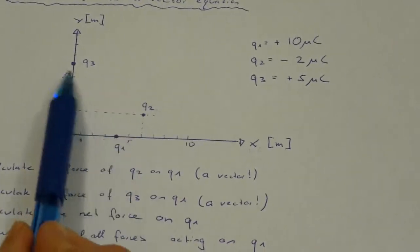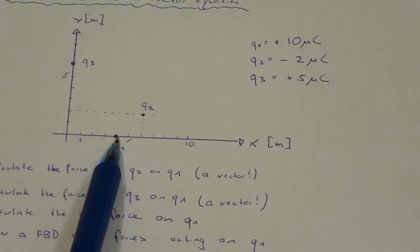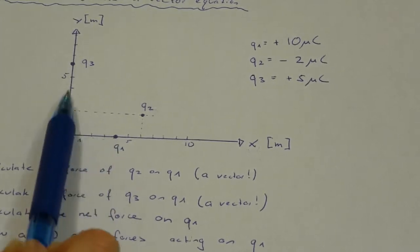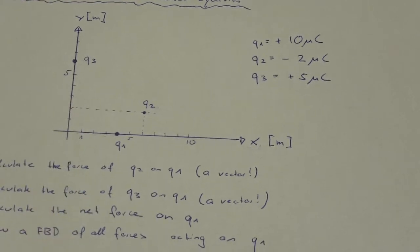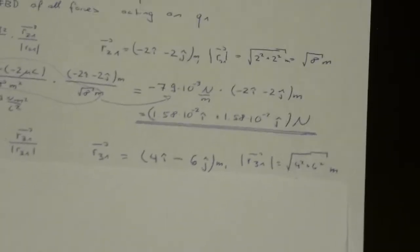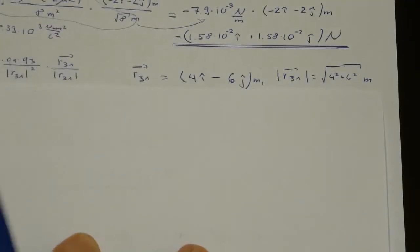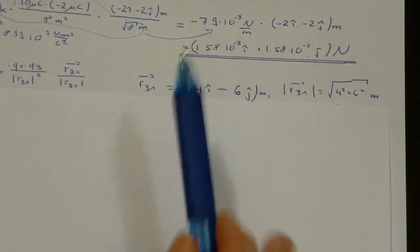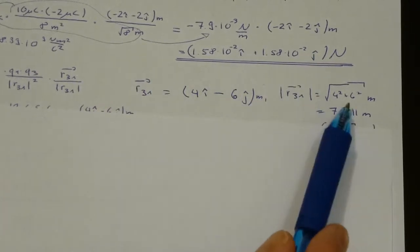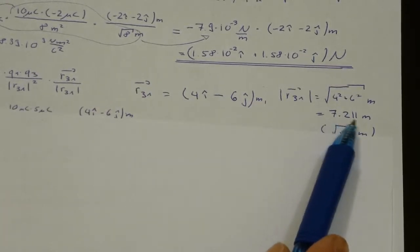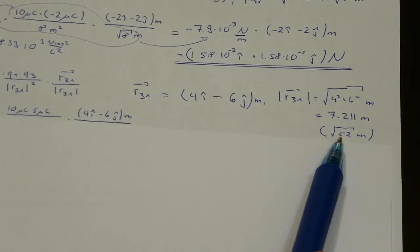From 3 to 1, I go 1, 2, 3, 4 in x-direction and minus 1, 2, 3, 4, 5, 6 in y-direction. Therefore my vector is 4i minus 6j, and the magnitude is 7.211 meters or the square root of 52 meters.